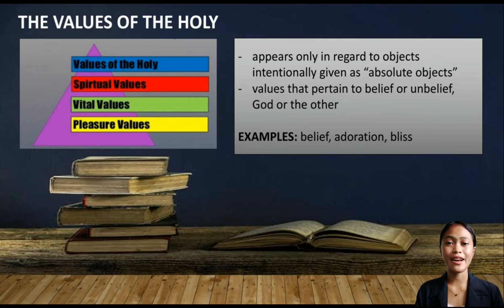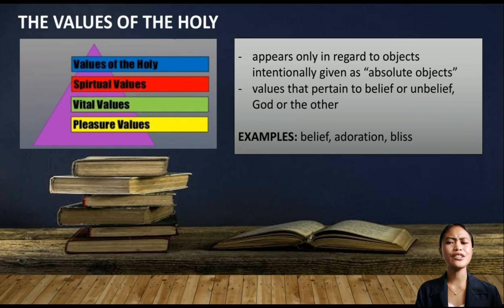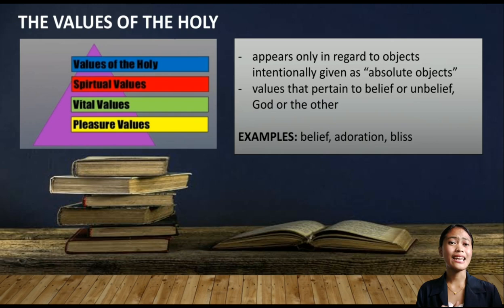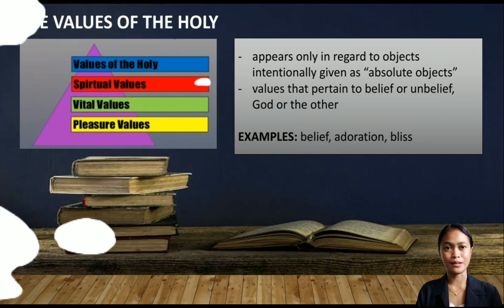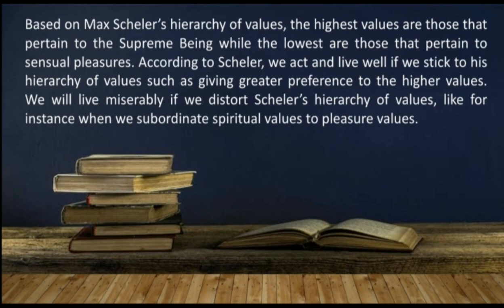The last one, at the uppermost level of Max Scheler's hierarchy of values, is the values of the holy. It appears only in regard to objects intentionally given as absolute objects. These values pertain to belief or unbelief, God or other. Examples are belief, adoration, and bliss. For example, I am a Roman Catholic and I believe in God. I believe in His holiness and mightiness. I adore and admire Him, and my trust and belief in Him is immeasurable.